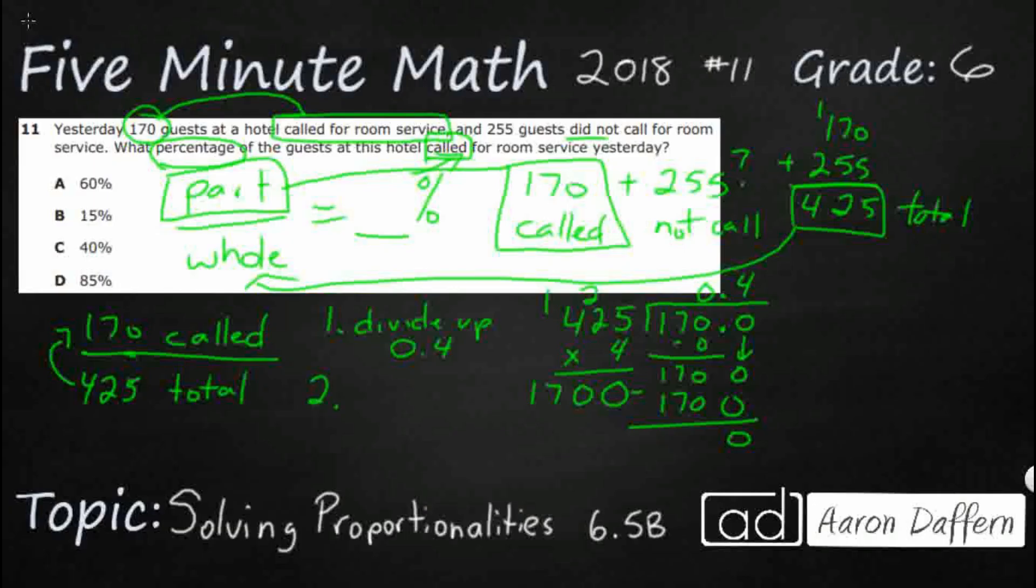Next, to change from a decimal to percent, because we're looking for a percent right there, we're going to move the decimal point two times to the right. And so we're going to take 0.4 and we're going to add two zeros, or we're going to add two decimal places over there. We're going to put a zero there where that blank was. Drop the zero. Let's put a percent sign and four tenths is equal to 40 percent.